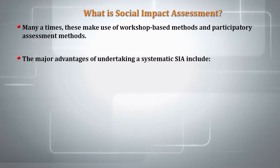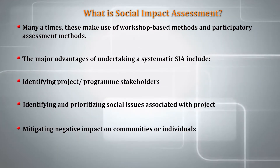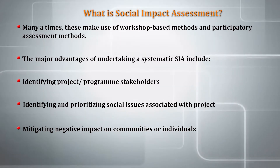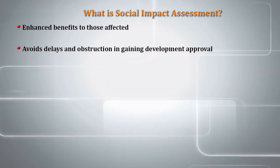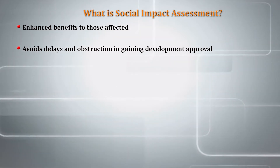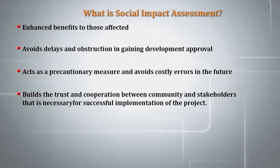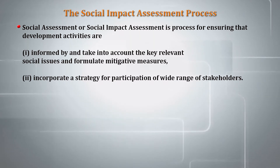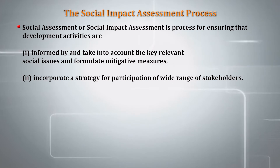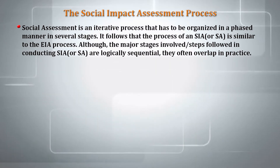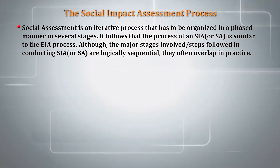Many times these make use of workshop-based methods and particularly participatory assessment methods. The major advantages of undertaking a systematic SIA include identifying project and programme stakeholders, identifying and prioritizing the social issues associated with the project, mitigating negative impacts on communities or individuals, enhancing benefits to those affected, avoiding delays and obstruction in gaining developmental approval, acting as a precautionary measure to avoid costly errors in the future, and building trust and cooperation between community and stakeholders necessary for successful project implementation. The social impact assessment process ensures development activities are informed and take into account key relevant social issues, formulate mitigative measures, and incorporate a participation strategy for a wide range of stakeholders.